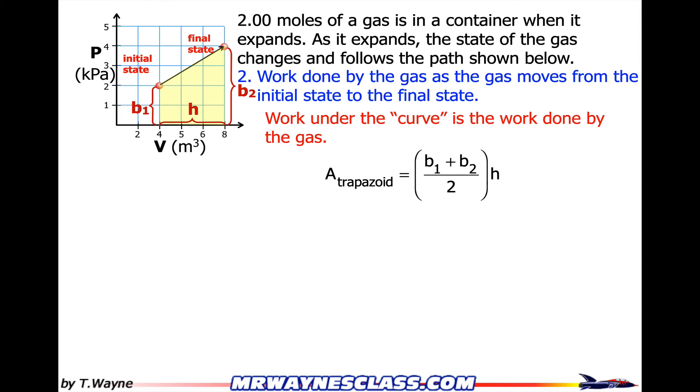That means that this is B1, this is B2, and the height is actually sideways in this trapezoid. So that's kind of nice, a little bit less to work with. So the area is the work under the curve, and that's the work done by the gas, not the surroundings, but by the gas.